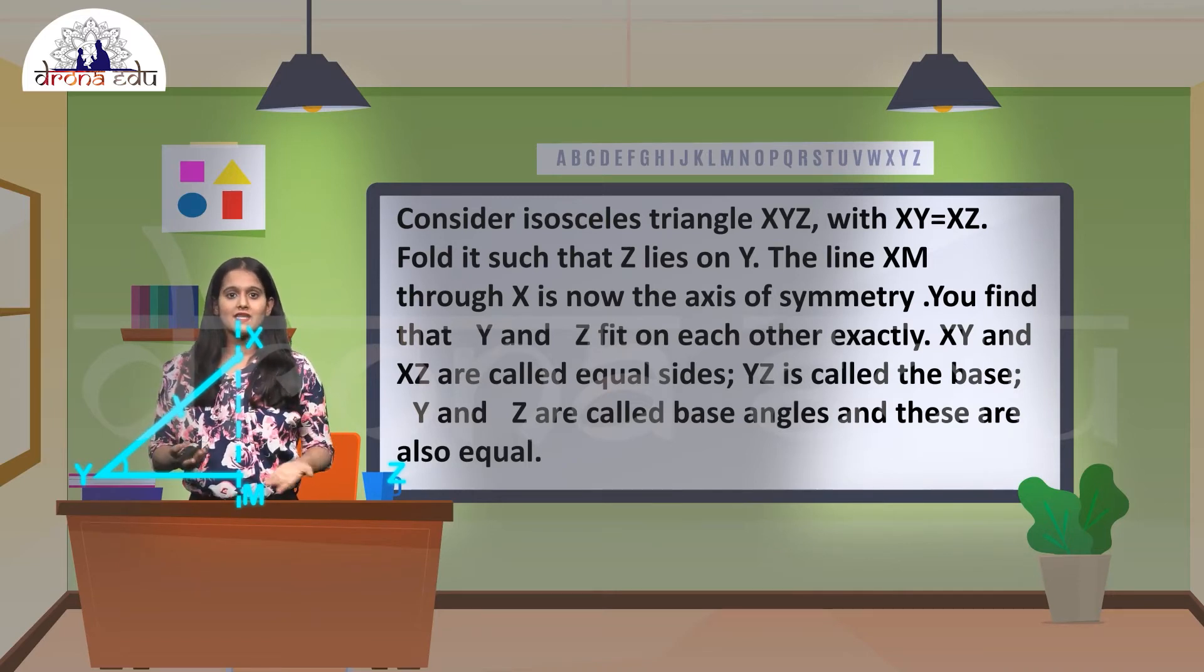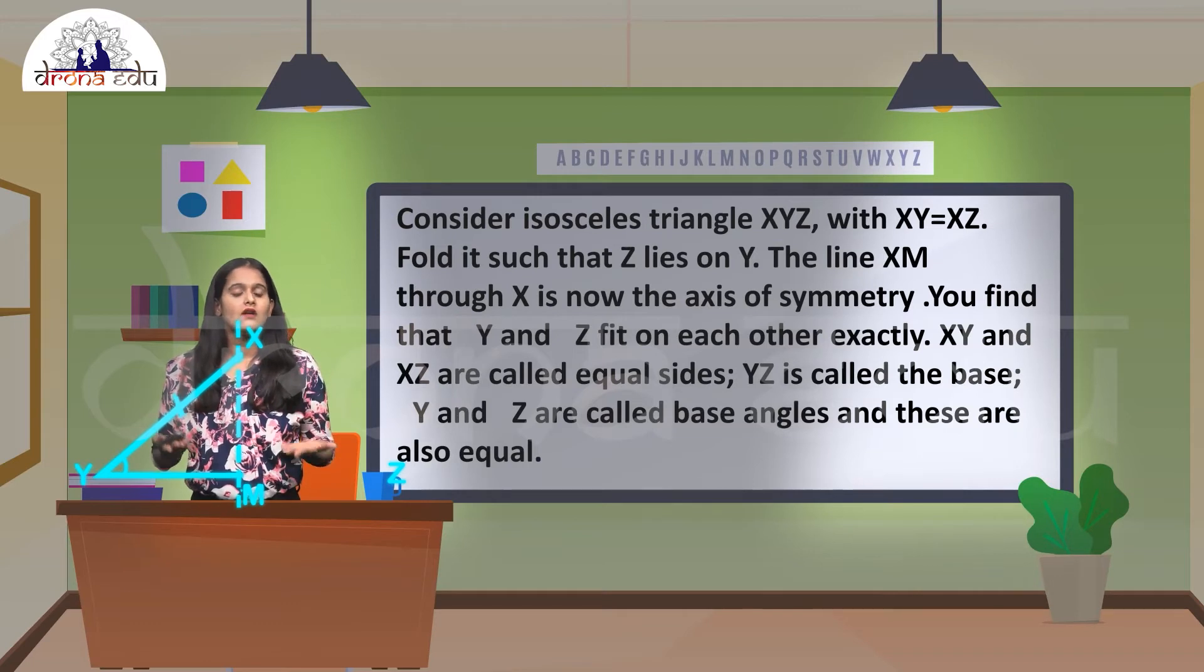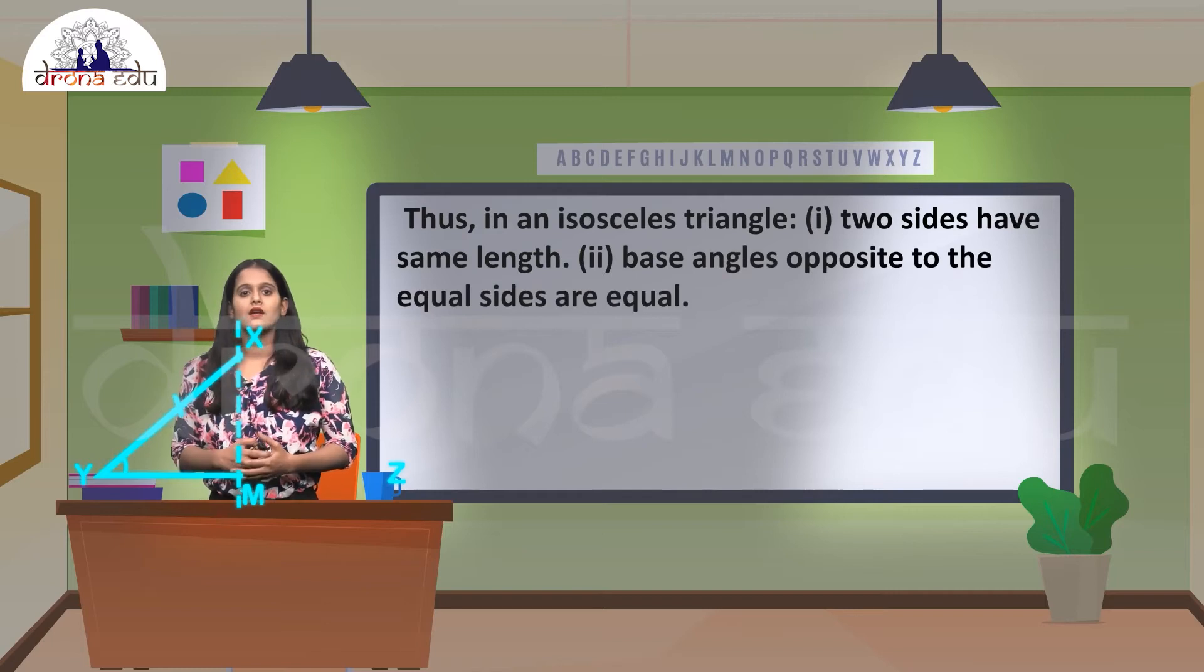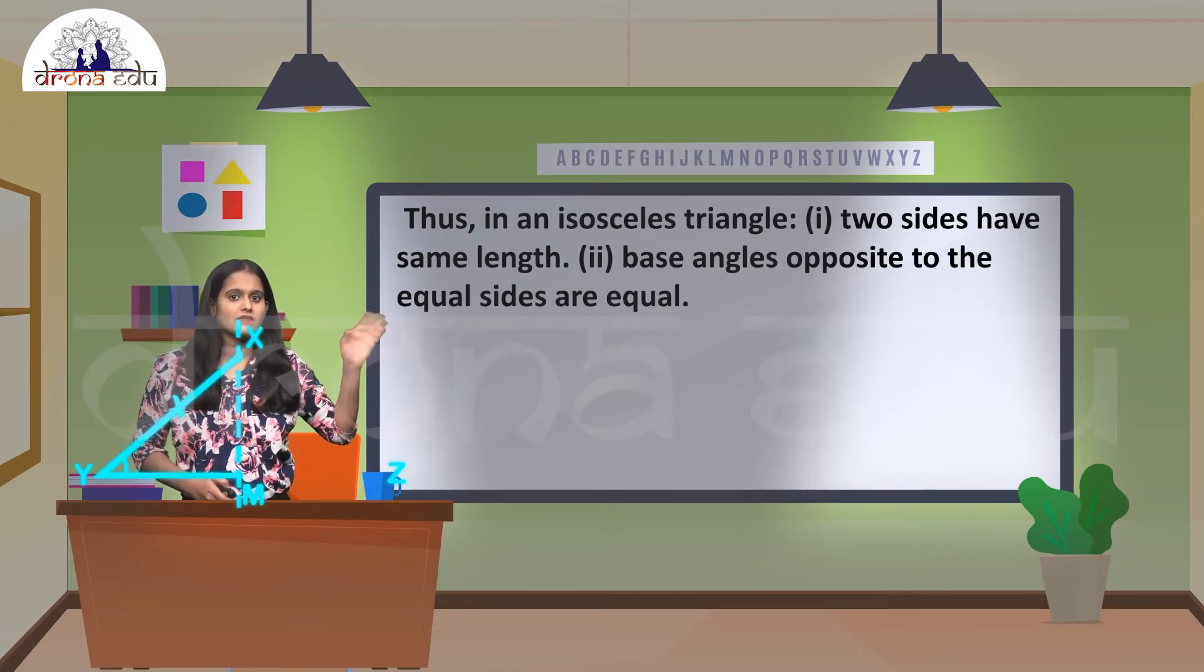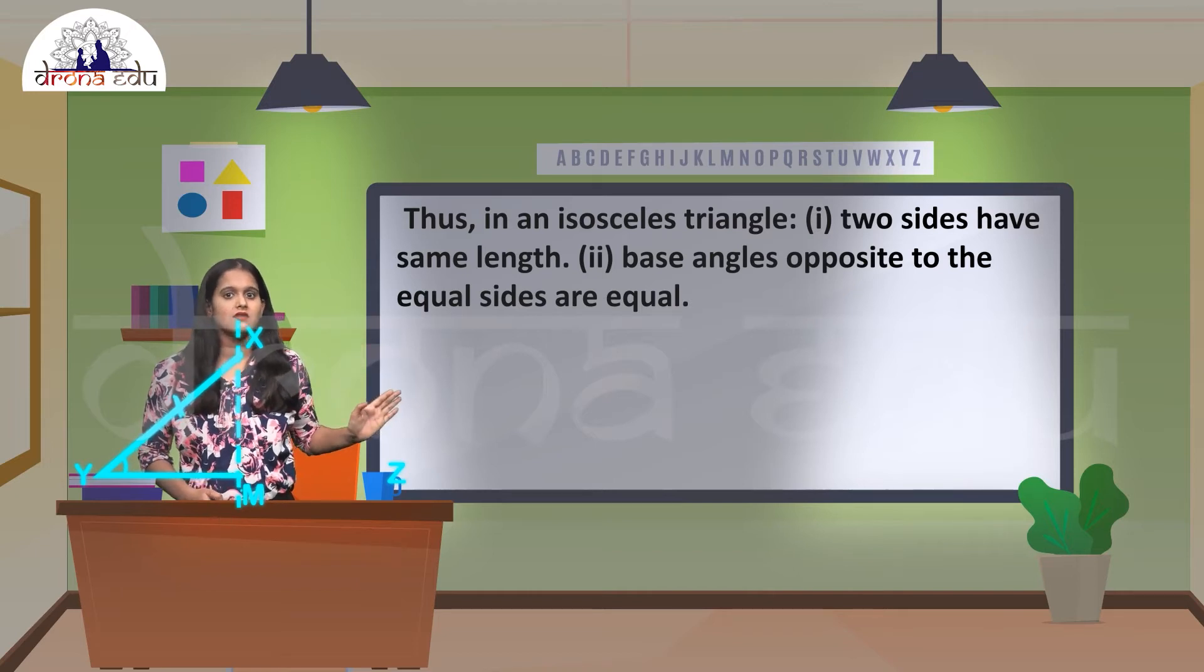And here, YZ is called the base, and angle Y and angle Z are called base angles because they are equal. From this we can conclude that in an isosceles triangle, two sides have the same length and base angles opposite to the equal sides are equal.